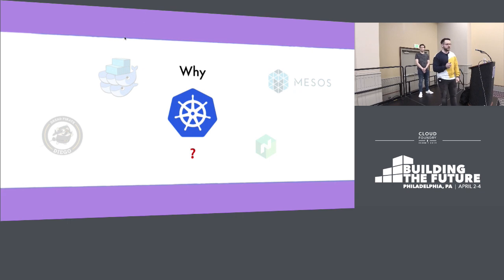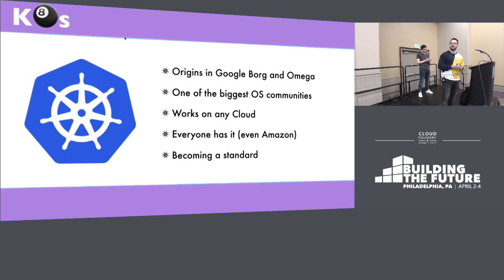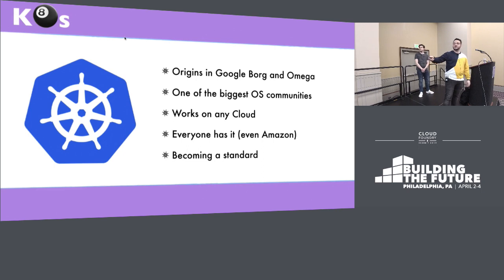Why Kubernetes? Kubernetes has its origins in the Google Borg and Omega scheduler. They're not open source schedulers, but there are many papers out there. They've been around for almost 20 years, and all the experience of those two schedulers flowed into Kubernetes — which is probably a good reason why Kubernetes is such a good orchestrator. It has one of the biggest open source communities, it works on any cloud, and it's becoming — or already is — the standard.